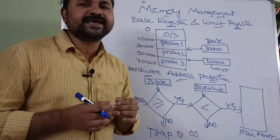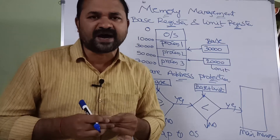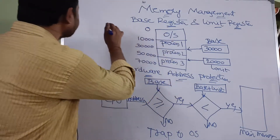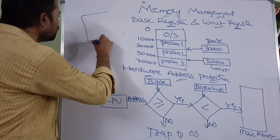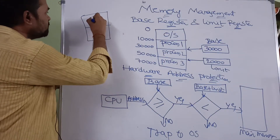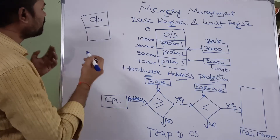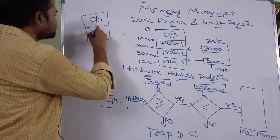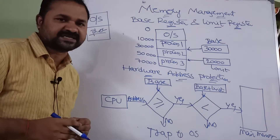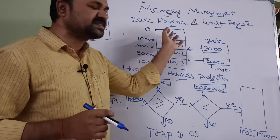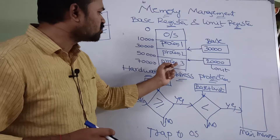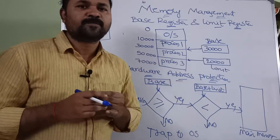Main memory is divided into two parts. The first part specifies the operating system, whereas the second part specifies user processes. Here we have three processes: process 1, process 2, and process 3.